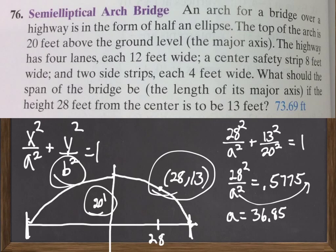And then, when we double that, we get that 2a, or the width of the arch, or the span of the bridge, is 73.69 feet.